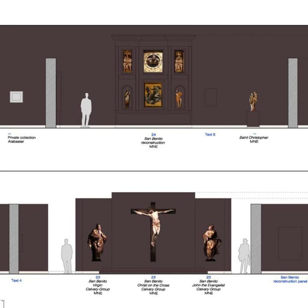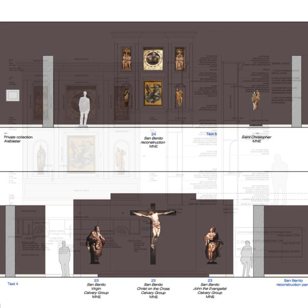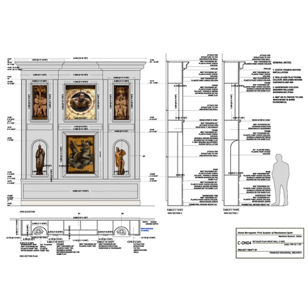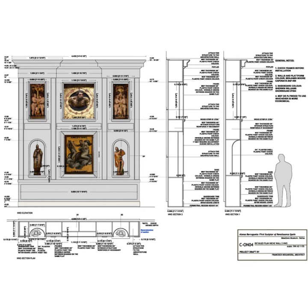In the case of the Beruguete installation at the Meadows, Spanish architect Francisco Bocanegra created special design elements to evoke the original architectural settings of the sculptures. Once plans are approved, the design is then completed with technical construction plans. These include detailed specs for the fabrication of temporary walls, pedestals, and special architectural features. This is the final step before construction begins.